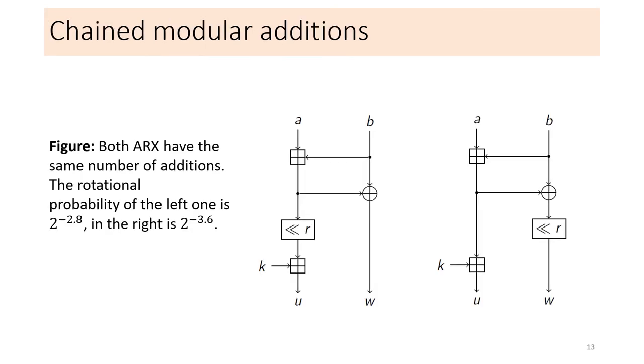To illustrate the chain of modular additions, let us take a look at the following two figures. Both of them have the same number of modular additions and operations. In the left one, there is a rotation in the left branch between the two additions, while in the right figure this rotation is moved, so the two modular additions form a chain. Even though the two figures have the same number of additions, their rotational probabilities are different. 2 to the minus 2.8 for the singular additions and 2 to the minus 3.6 for the chained additions.